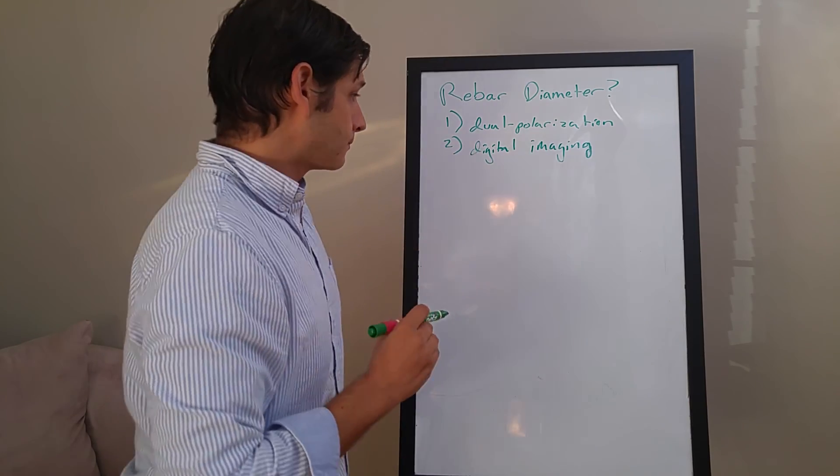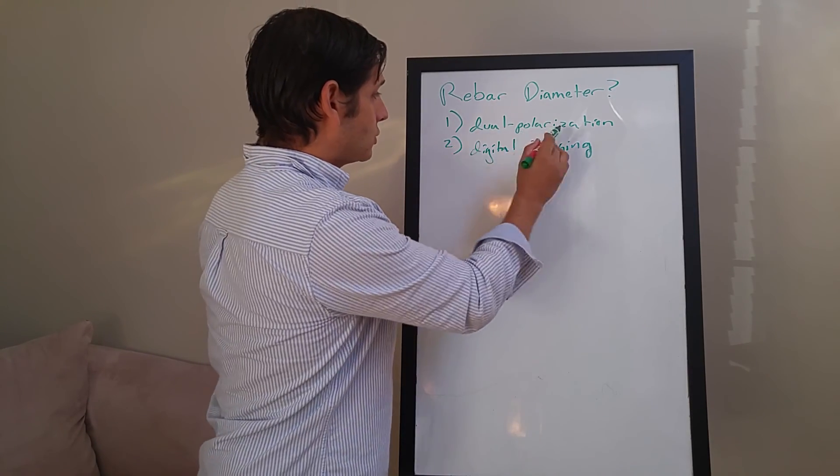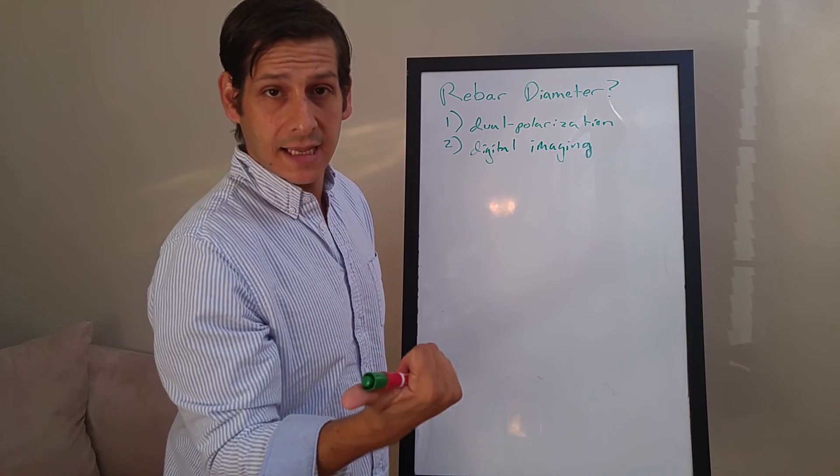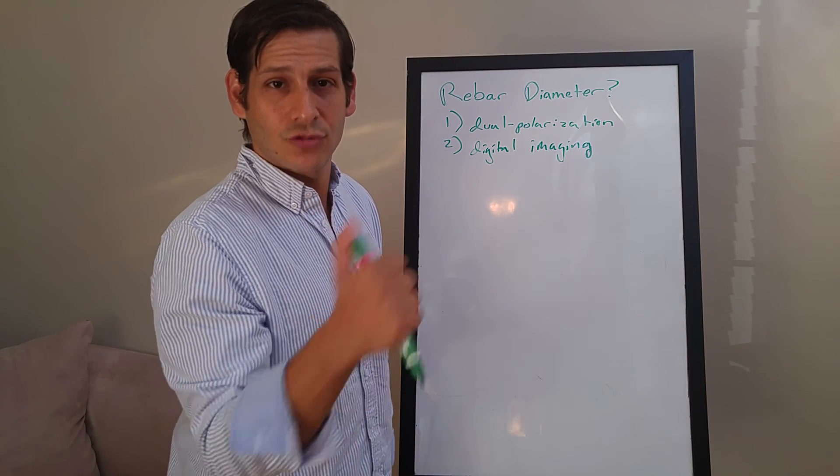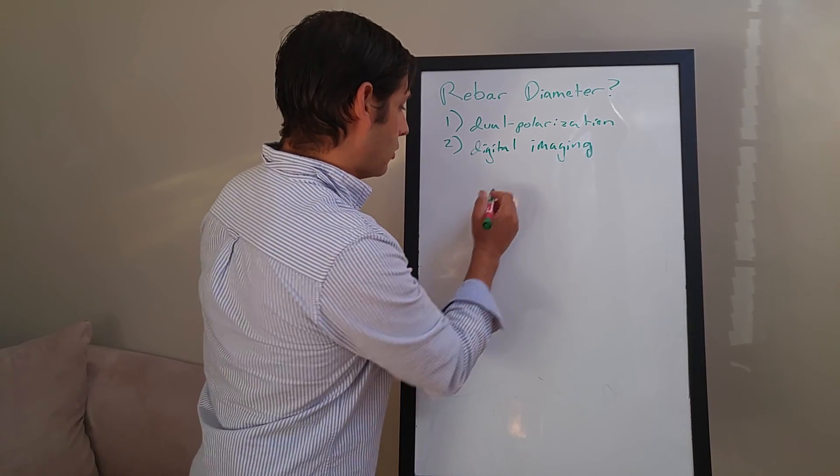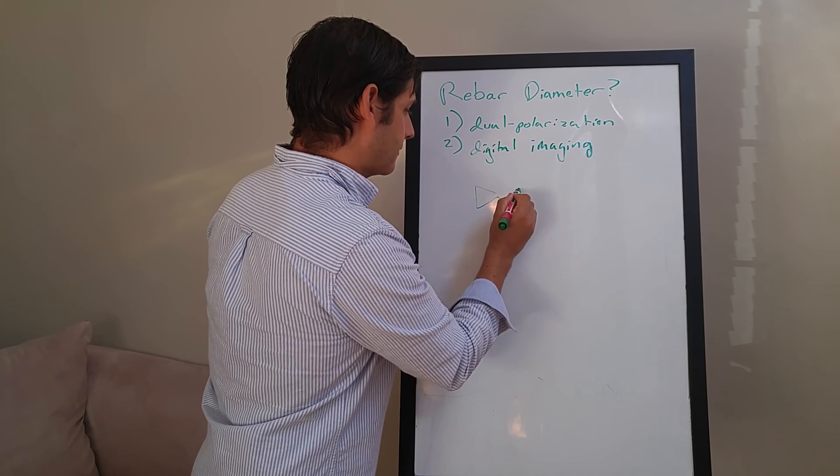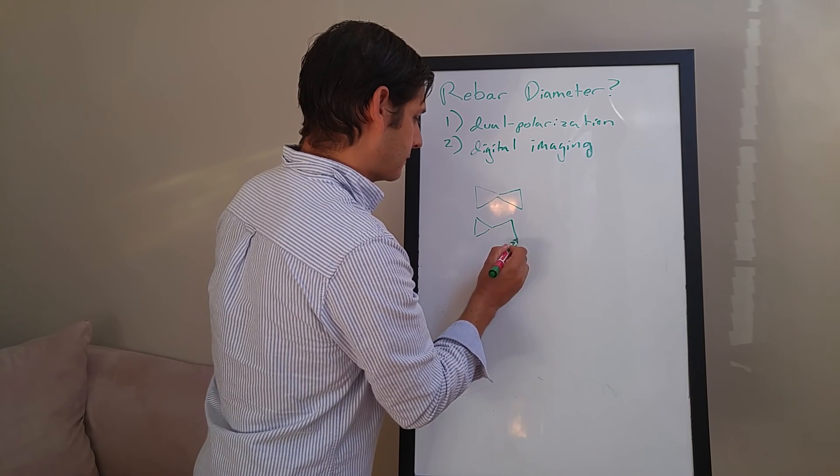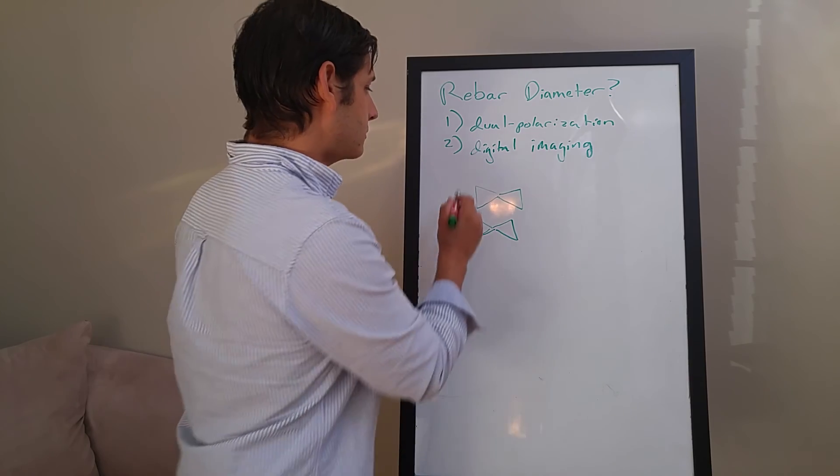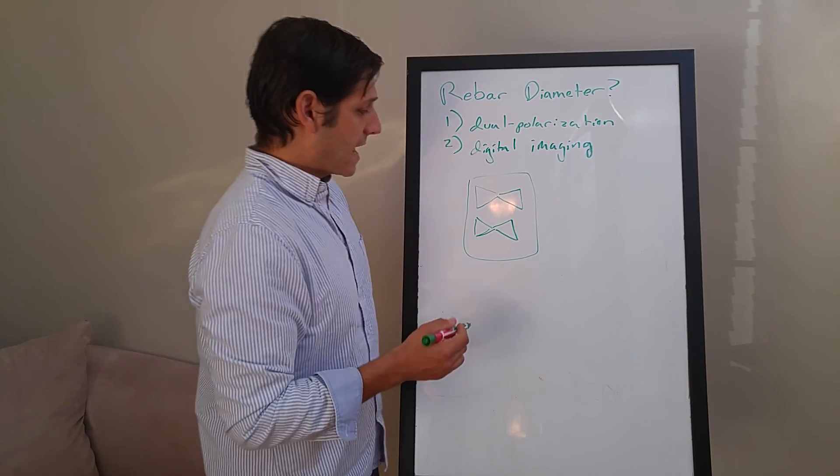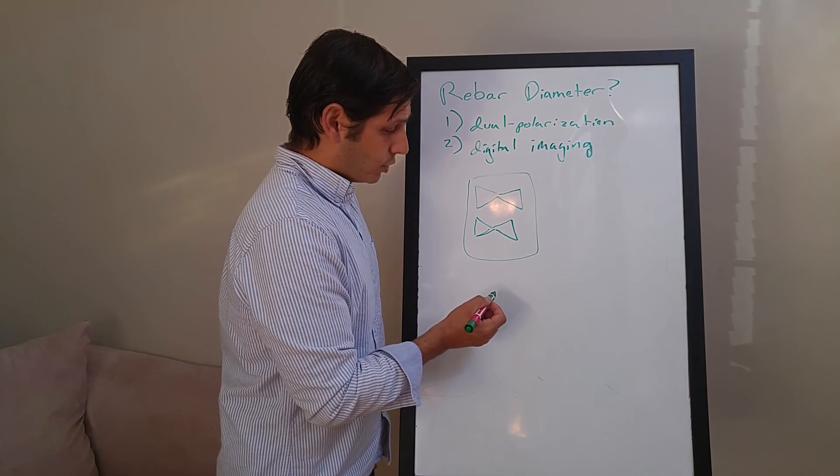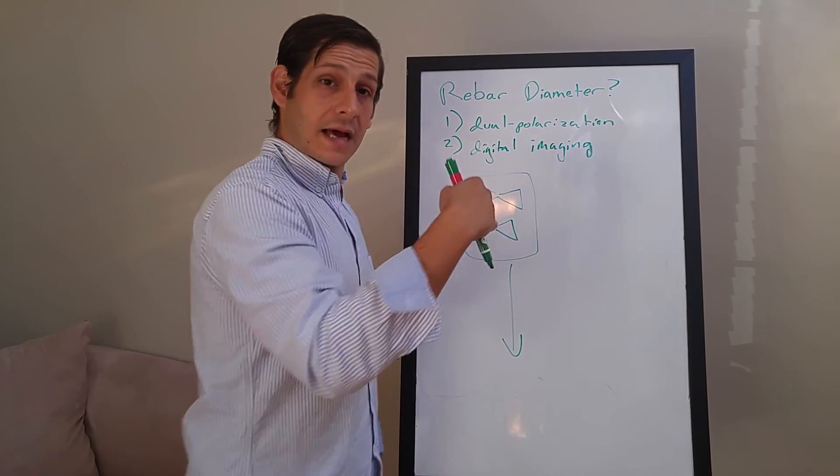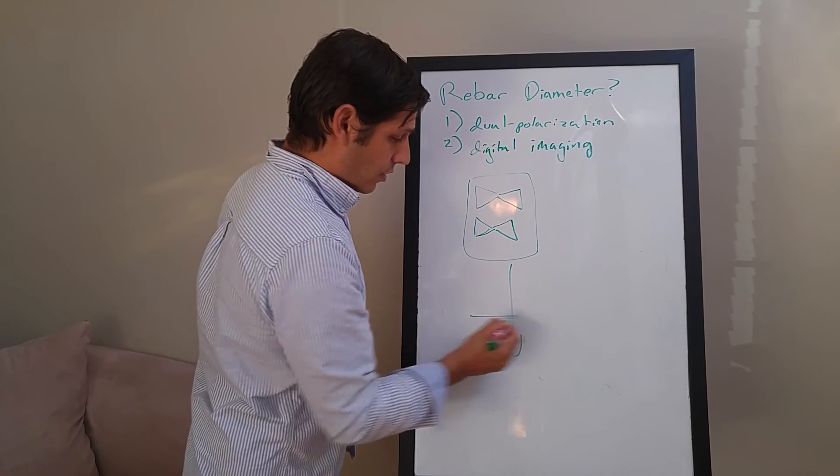So how does dual polarization work? Your GPR with a transmitter and receiver, with your transmitting antenna and your receiving antenna, will look something along these lines - sort of a bow tie. If you are pushing it along the ground surface, you're looking top down at your antenna and you're coming this way, and your rebar are going this way.